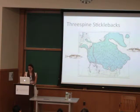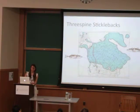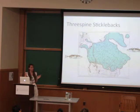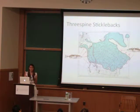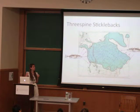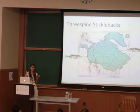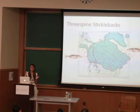Following the last ice age, ancestral marine stickleback were able to populate various freshwater lakes and streams. This generated an array of both marine and freshwater populations that exist today all across the northern hemisphere. You might even see some stickleback in Strawberry Creek.